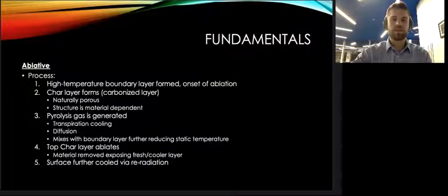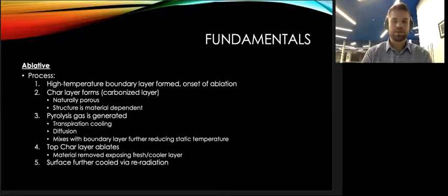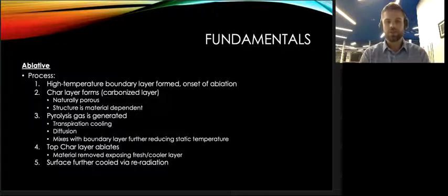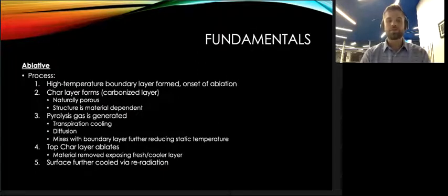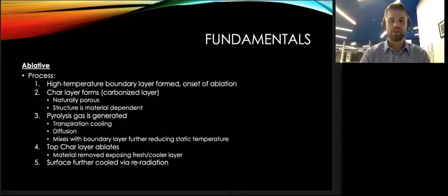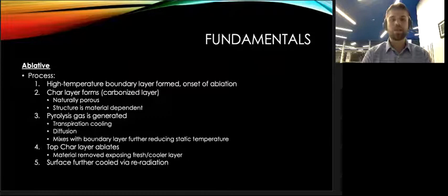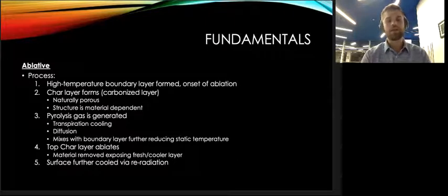Starting off with the fundamentals of ablation, I'm going to cover three main things: the char layer that forms, pyrolysis gas that is generated, and the top char layer that ablates. The top char layer is a carbonized layer formed at the top surface of the TPS that is essentially burned from the high temperature of the boundary layer. It's naturally porous and its structure is strongly material dependent. The structure of this material strongly affects how the thermal protection system is actually cooled, and that cooling comes into play with the next topic of pyrolysis gas.